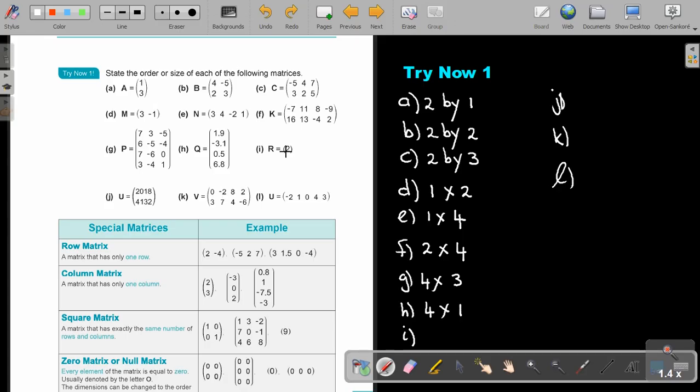Number I. Can you see? It's just one row and one column. So, it's a one by one or one multiply one.